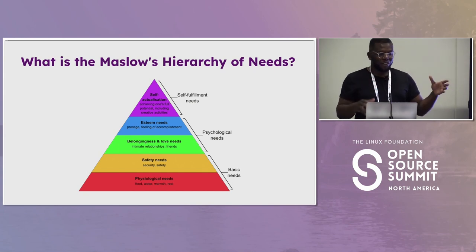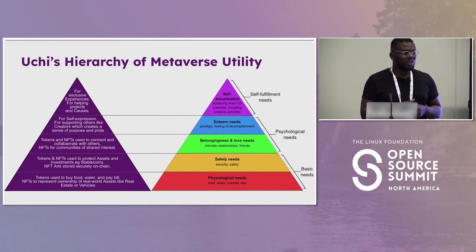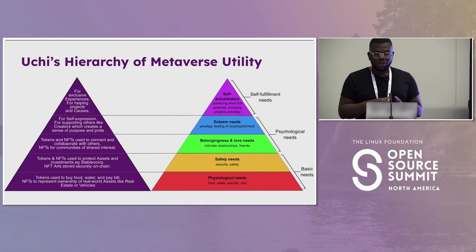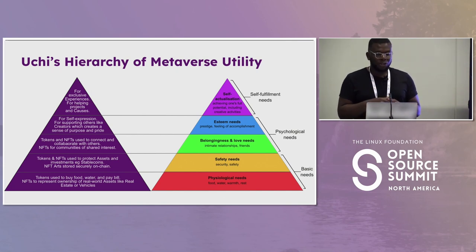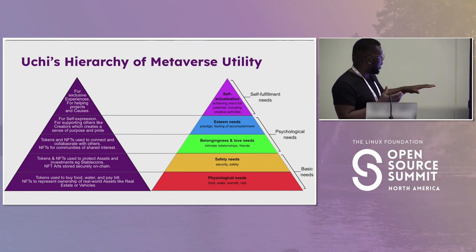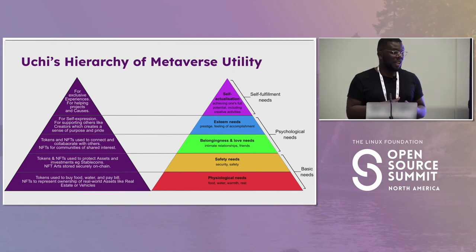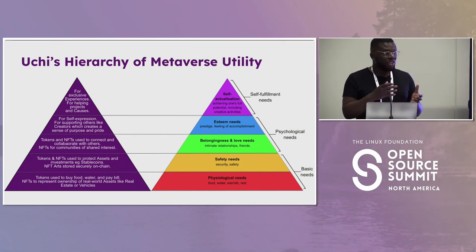Using Maslow's hierarchy of needs, I've come up with something I'm calling the UCHI's hierarchy of metaverse utility. I use this when evaluating crypto projects — I advise a couple of projects and when I first speak with the team I try to understand how that project meets one of Maslow's hierarchy of needs. Utility refers to the usefulness or value of something, so when we look at physiological needs, tokens and NFTs have the potential to help us meet those needs if they enable us to purchase basic necessities.